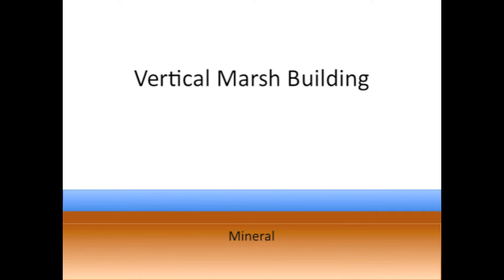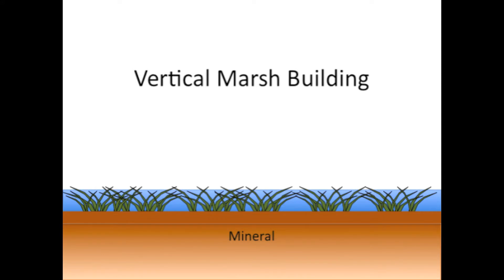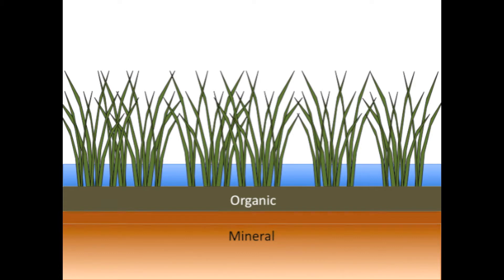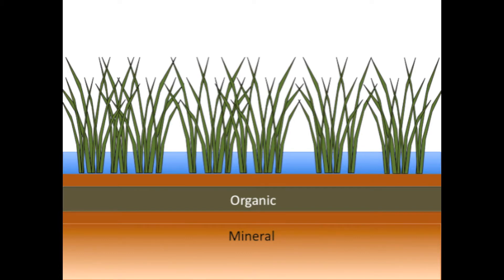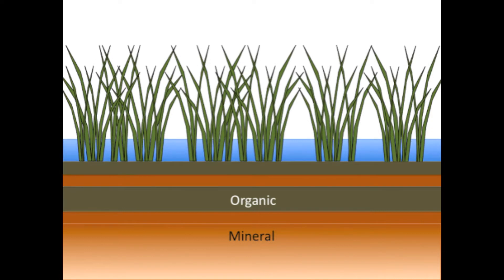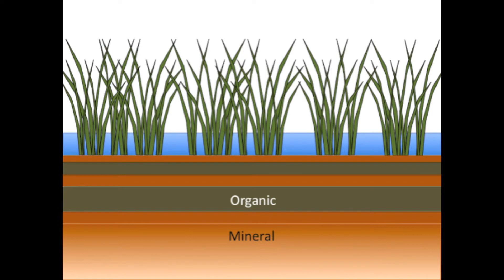Starting with an unvegetated mudflat, mineral sediment deposits add new layers on the surface. As marsh plants become established, they begin to contribute organic material to the soil, building layers of peat. There may be additional deposits of mineral material during storms or hurricanes, followed by another period of plant organic accumulation. After thousands of years, alternating layers of material create a pattern from oldest at the bottom to youngest at the top.